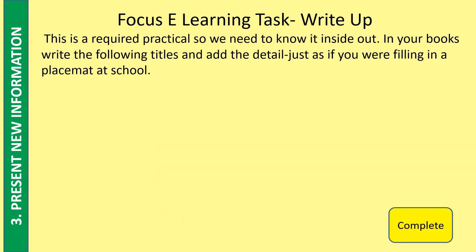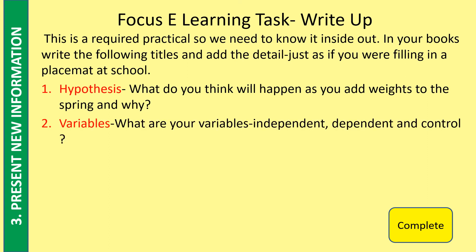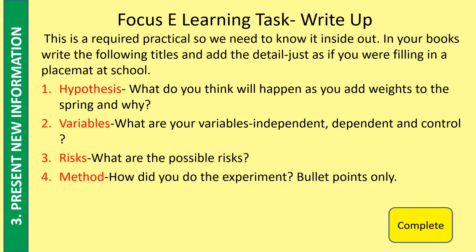This is a required practical, so we need to know all aspects of it. In your books, write the following titles and add all the detail just as if you were filling out a placemat at school. Number one: hypothesis — what do you think will happen as you add weights to the spring and why? Number two: variables — what are your independent, dependent, and control variables? Number three: risks — what are the possible risks? Number four: method — how did you do the experiment? Bullet points are fine.